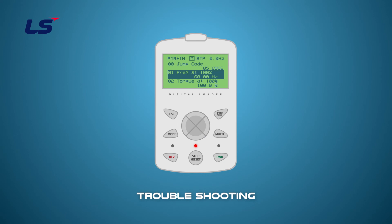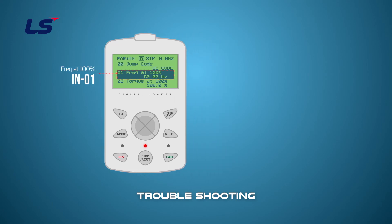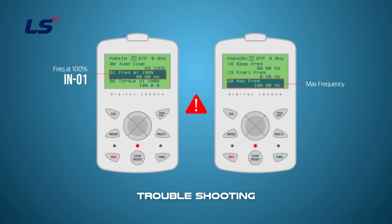The frequency at 100% input can be set in IN group 1 parameter. It does not always work with the maximum frequency, so be sure to check it. If you want to set the maximum frequency to 100 hertz and drive at 100 hertz when the analog input voltage is at its maximum, you must change the IN group 1 parameter to the same value.